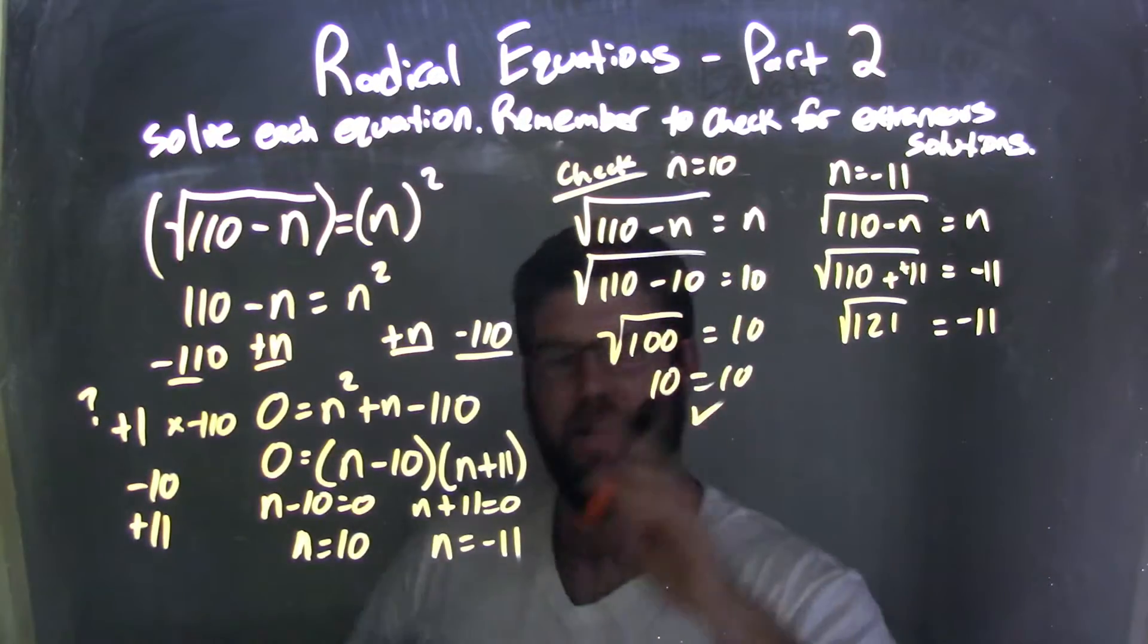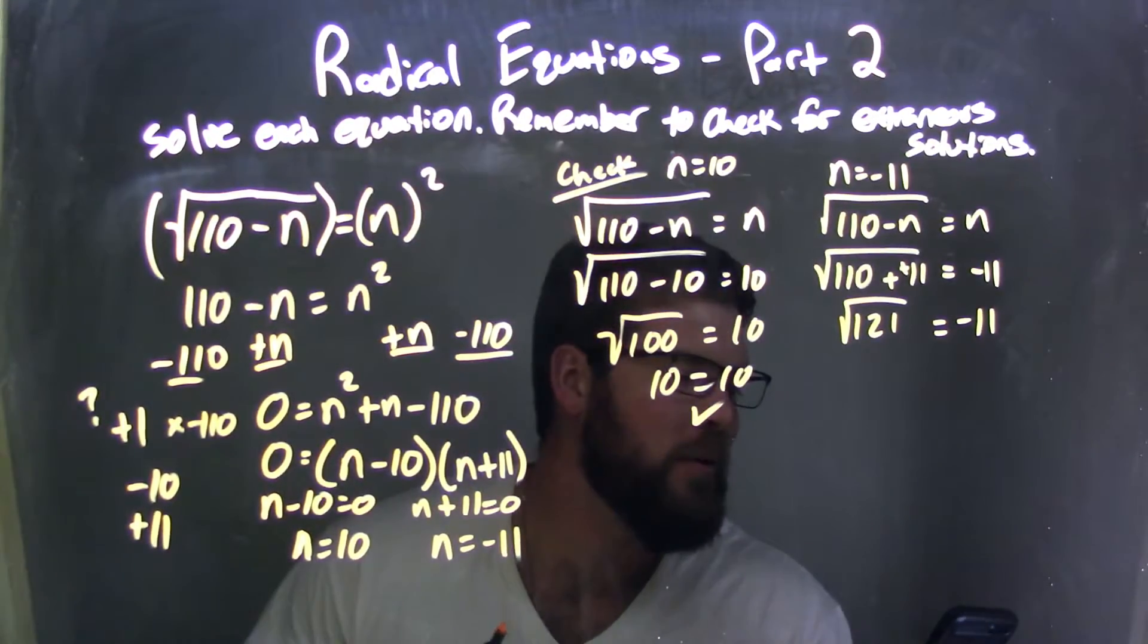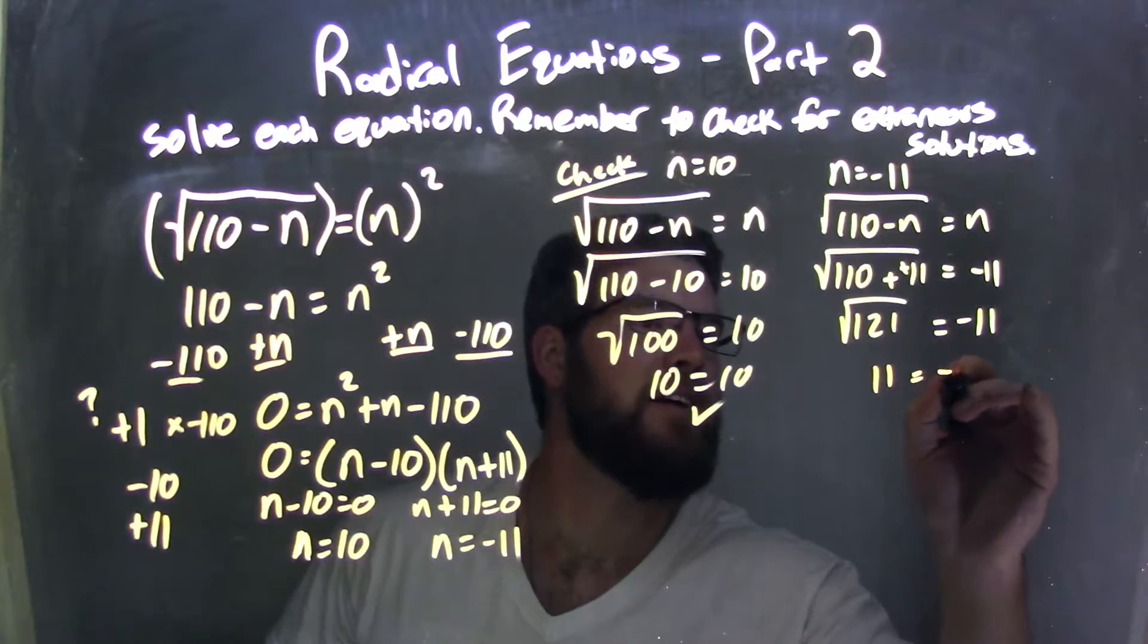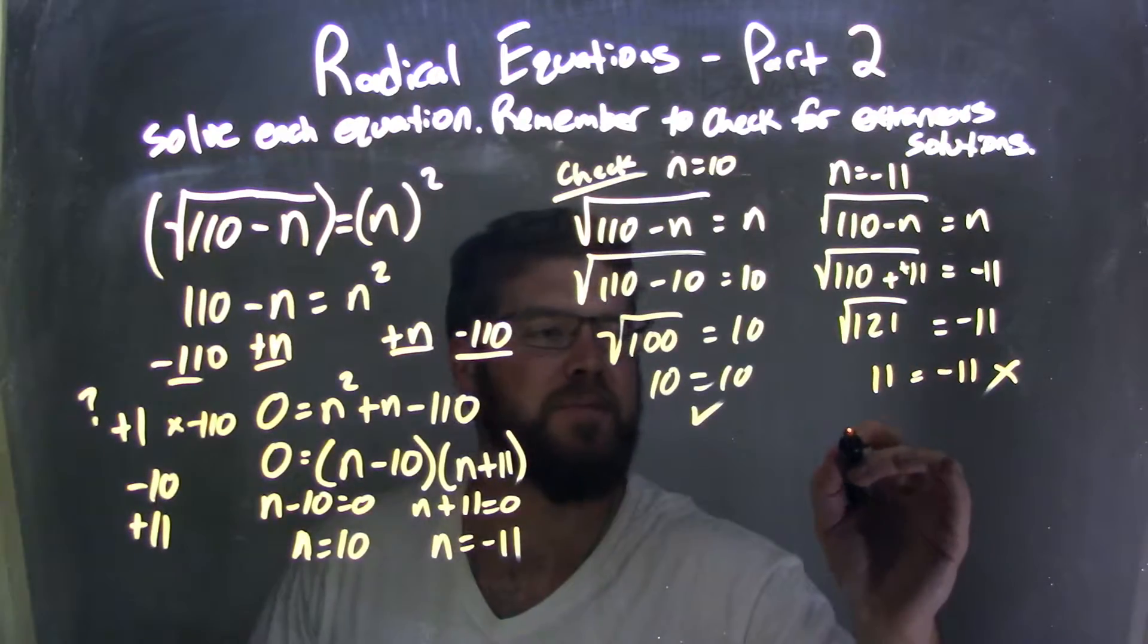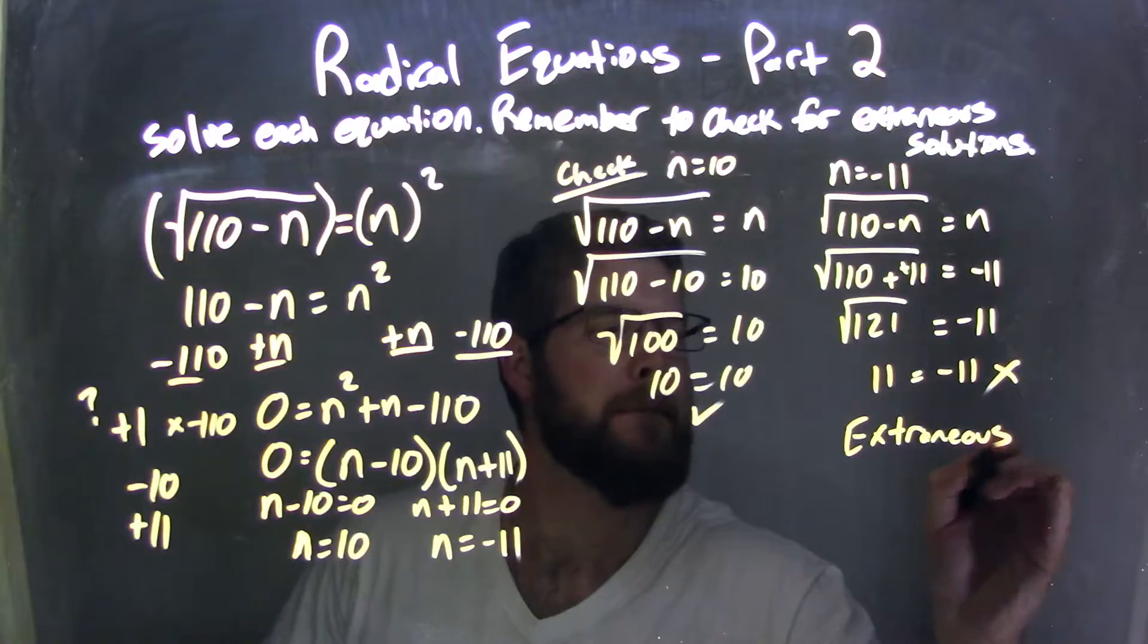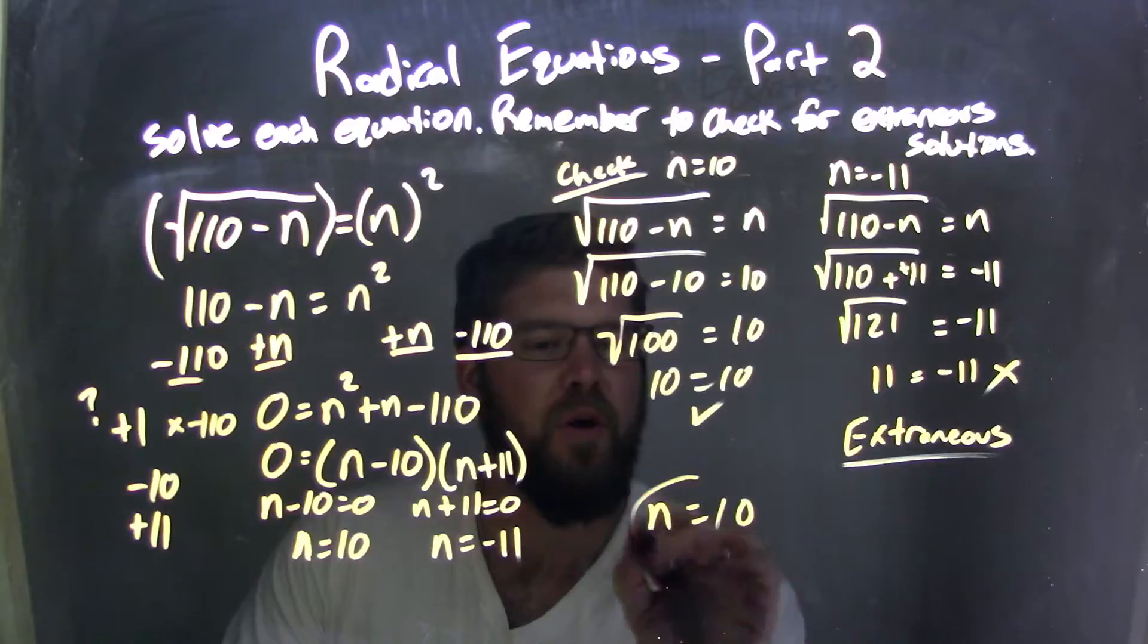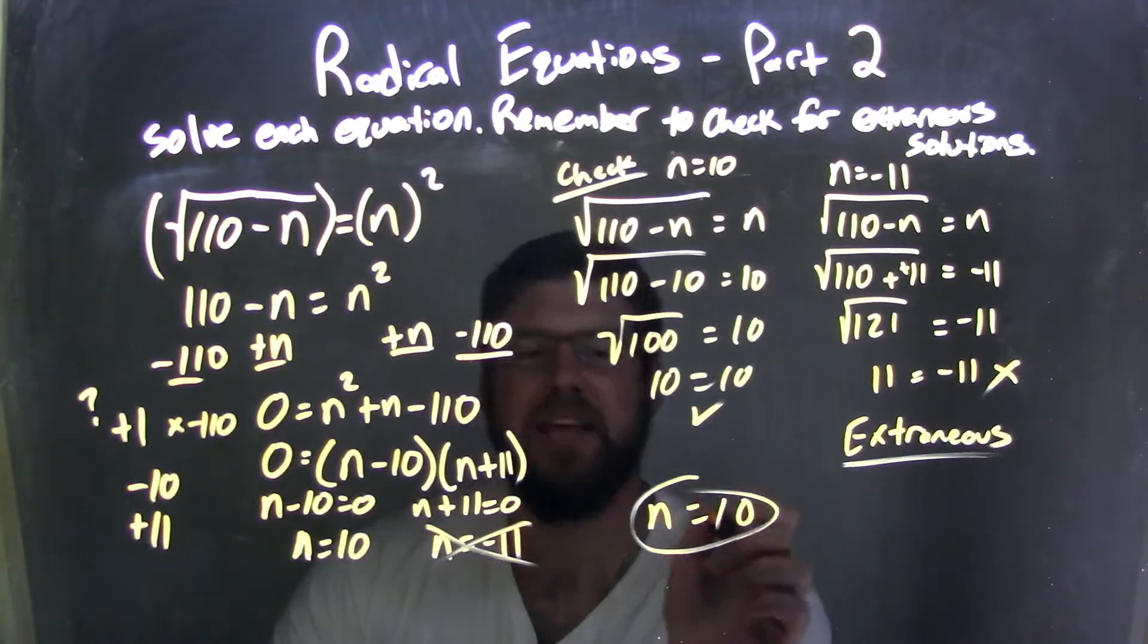I believe it's positive 11 off the top of my head, and a quick calculator, I'm drawing a blank right now, but we'll see, 121 divided by 11 is 11, it is true, I was correct, just wanted to double check here. But 11 does not equal negative 11, so that is our extraneous solution, but n equals 10 is our only solution, and n equals negative 11 is not, so our true solution is n equals 10, negative 11 is our extraneous solution.